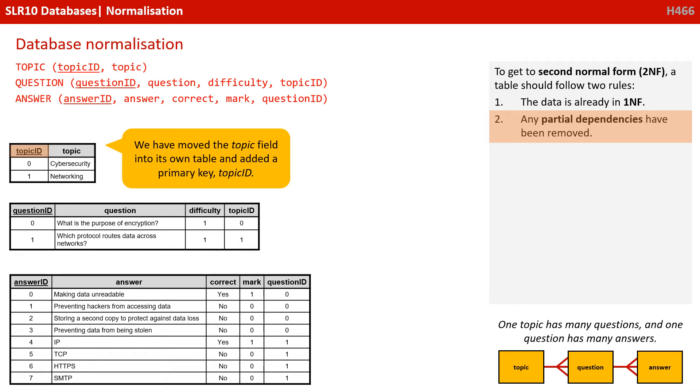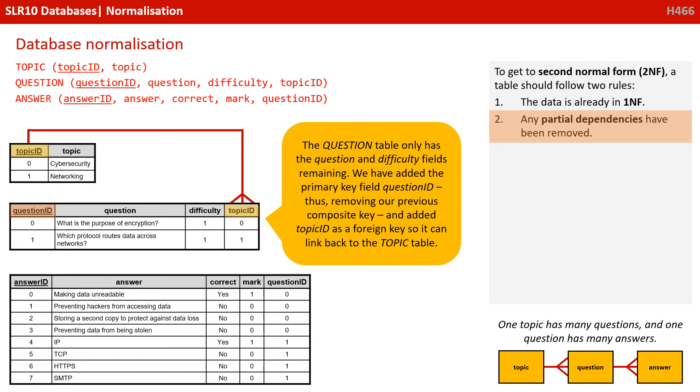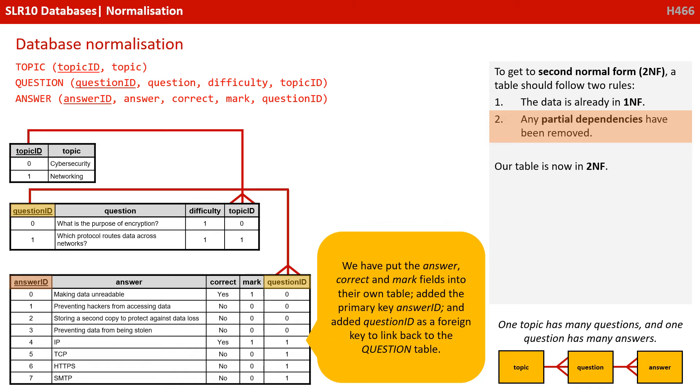We've moved the topic field into its own table and added a primary key topic ID. The question table only has the questions and difficulty fields remaining. We've added the primary key question ID, thus removing our previous composite key. And we've added topic ID as a foreign key so it can link back to the topic table. We've put the answer, correct and mark fields into their own table and added a primary key answer ID. We've also added question ID as a foreign key to link back to the question table. You can see us building up our entity relationship diagram in the bottom right hand corner. So currently we're saying that one topic can have many questions, and one question can have many answers.